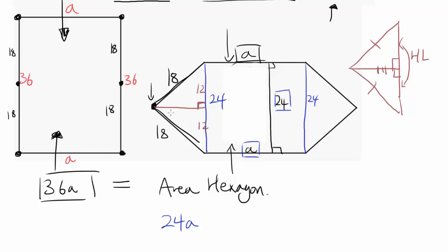Let's get back to the actual question. You have 12 and 12. So you know you can use Pythagorean theorem to find the length of this side. That's going to be square root of 18 squared minus 12 squared. So that's square root of 324 minus 144, which is square root of 180.